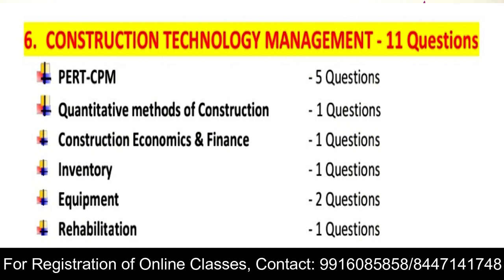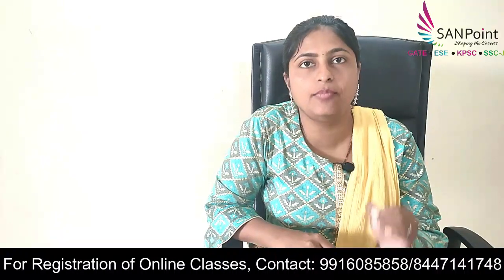Construction technology and management had 11 questions. All topics were different — the entire construction technology syllabus, which none of you would have studied in engineering. CPM came for 5 marks. Quantitative methods of construction — different methods — had 1 question. Construction economics and finance, including salvage value, rate of return, and investment, had 1 question. Inventory cost management had 1 question. Equipment had 2 questions. Rehabilitation, including scaffolding, had 1 question. Railway track modulus, which is part of bridges, had 1 question. That is how the 2019 PWD AE paper analysis looks.